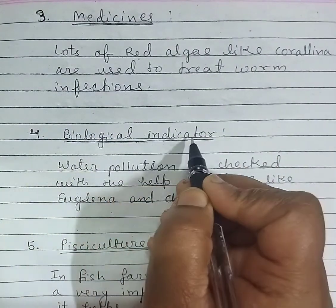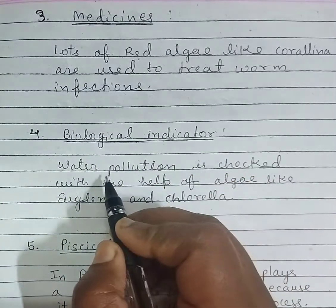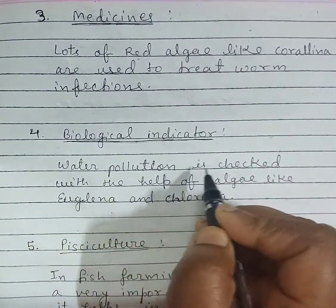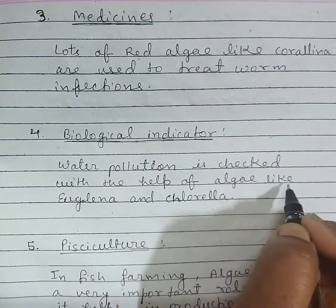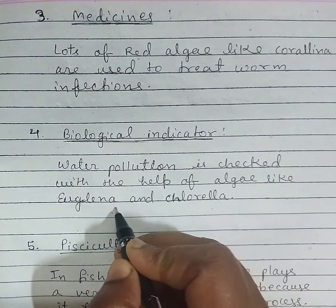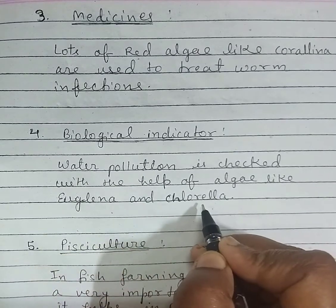Fourth, biological indicator. Water pollution is checked with the help of algae like Oscillatoria and Chlorella.